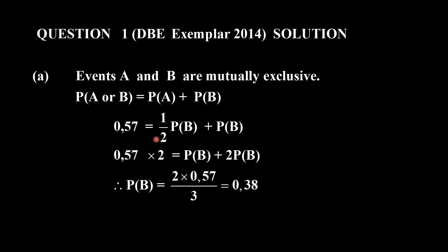And then I end up with 2 times 0.57. And then if I multiply the half by a 2 I get probability of B, multiply probability of B, I get 2 probability of B. I can then make probability of B the subject and that's the answer I get, 0.38.